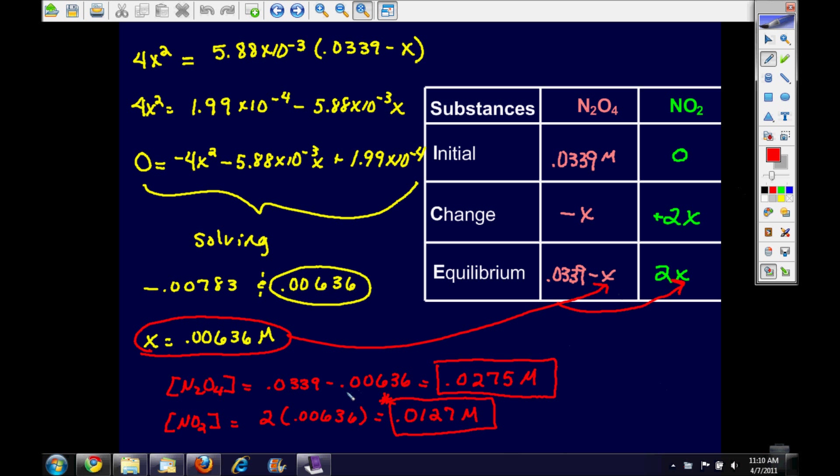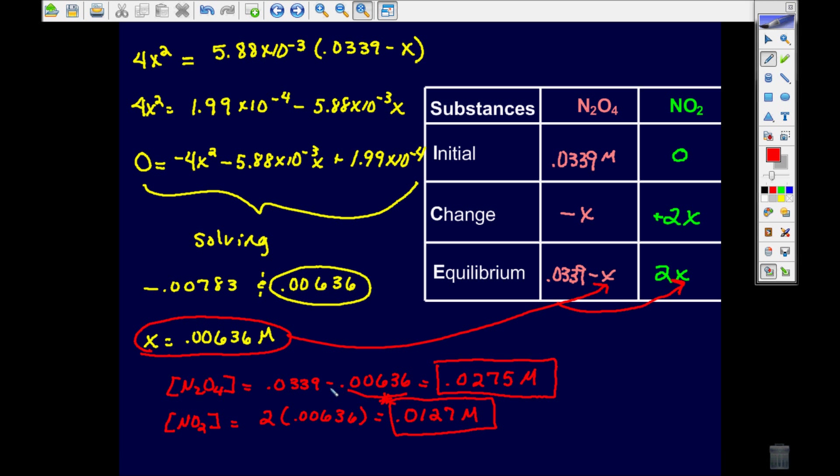To figure out the percent of reactant that dissociated, which would be the percent of N2O4 that dissociated, we need to look at x which is the amount that actually dissociated and that's the part. Percent is always the part over the whole. So I'm going to put the part which is x that dissociated, 0.00636, divided by the whole amount that I started with which was 0.0339 and I'm going to multiply that times 100 to get my percent. And when I do that I get 18.8 percent dissociated, and for significant figures you can round that to 19 percent, and that's all there is to it.